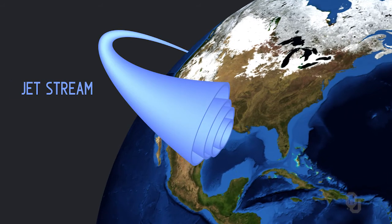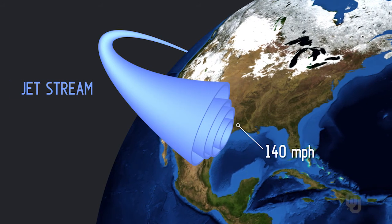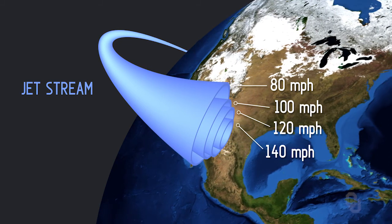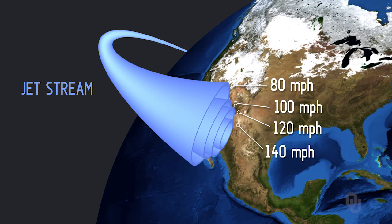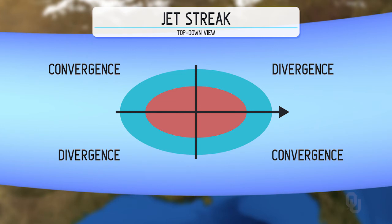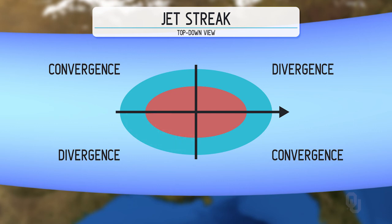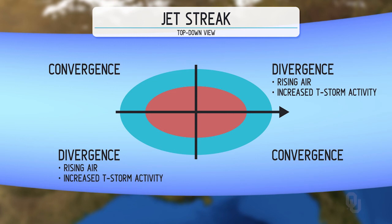Think of the jet stream as a tube — the center might be 140 miles an hour, or as low as 50. Within that tube there is a jet streak, moving faster than the wind around it. Where would you look for thunderstorms? In the upper left-hand corner and the right rear quarter of the jet streak, there is divergence aloft — the winds are spreading out. When air spreads out up top, air has to come up from somewhere below, lending itself to increased rotation.